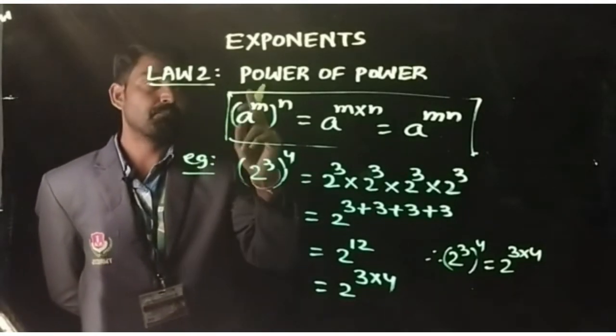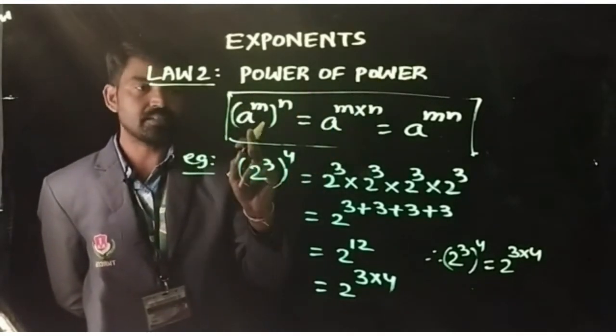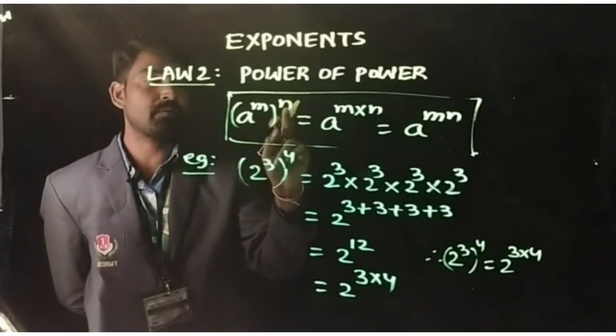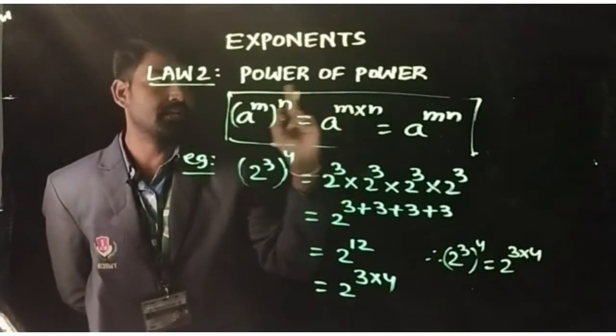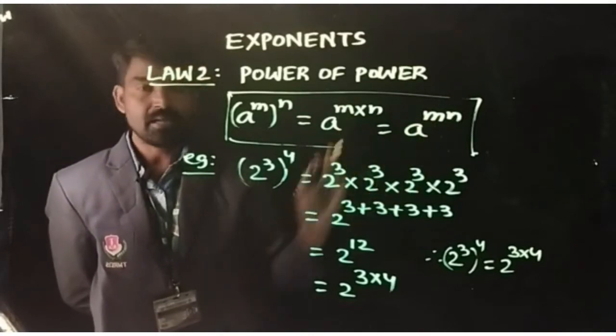Now, Law 2, that is power of power: (a^m)^n equals a^(m×n) or a^mn.